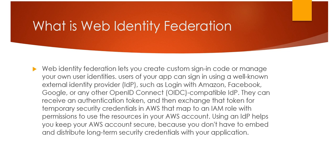Web identity federation lets you create custom sign-in code or manage your own user identities. Users of your app can sign in using a well-known external identity provider such as Login with Amazon, Facebook, Google, or any other OpenID Connect compatible IDP. They can receive an authentication token and then exchange that token for temporary security credentials in AWS that map to an IAM role with permissions to use the resources in your AWS account. Using an IDP helps you keep your AWS account secure because you don't have to embed and distribute long-term security credentials with your application.